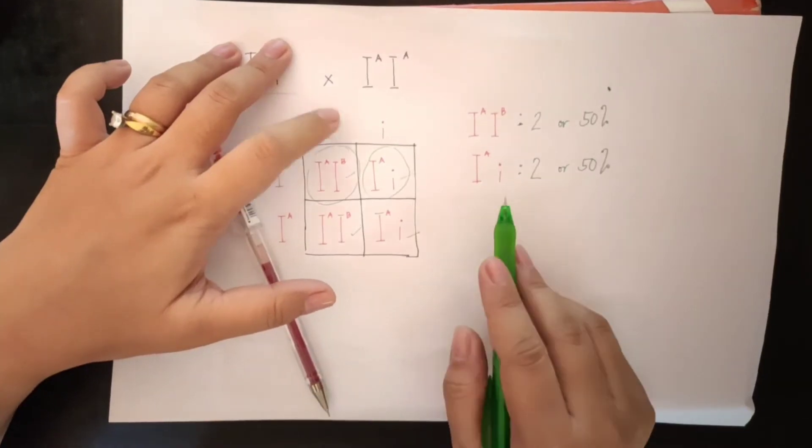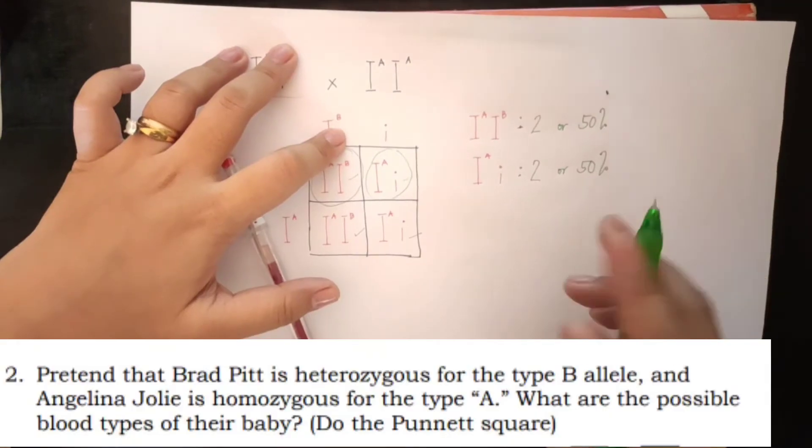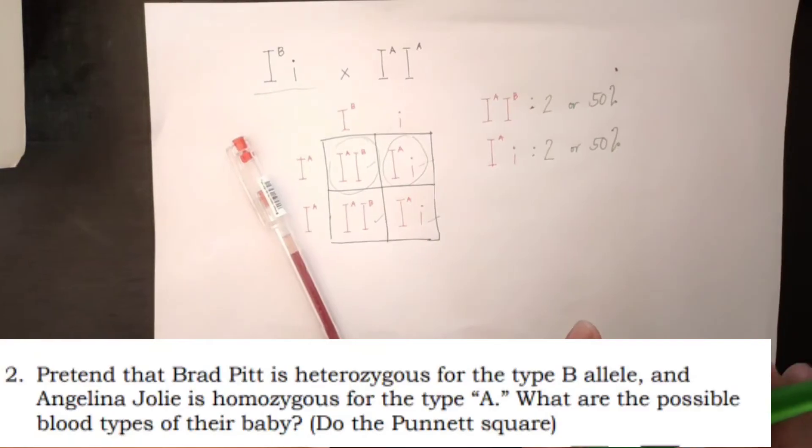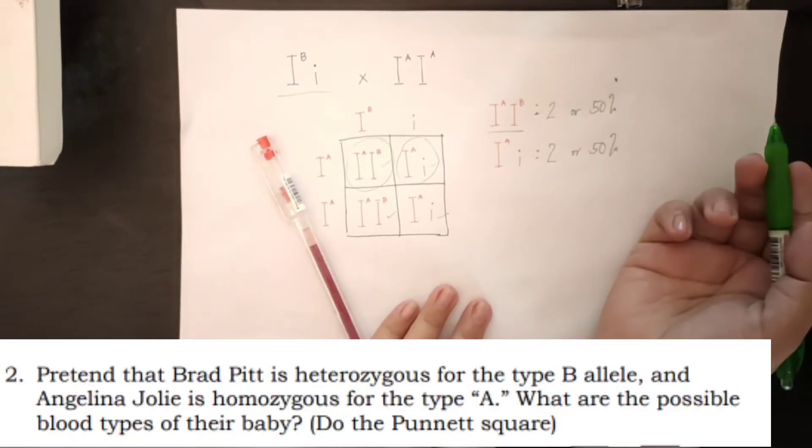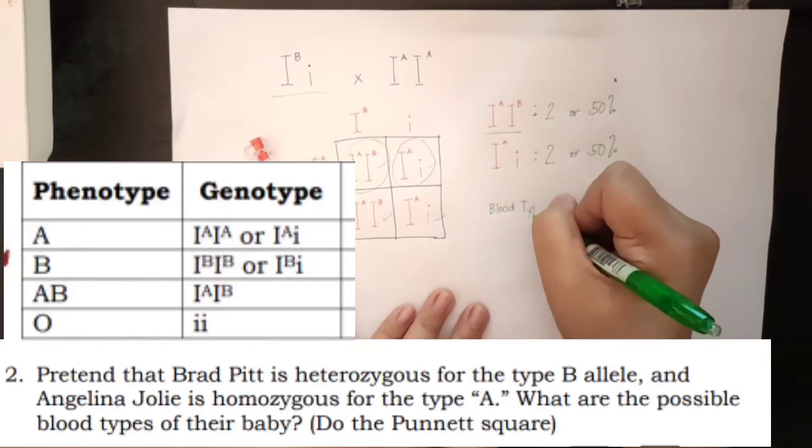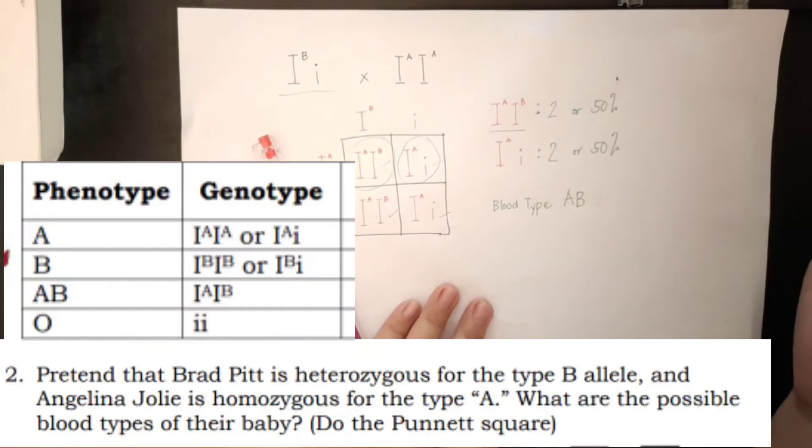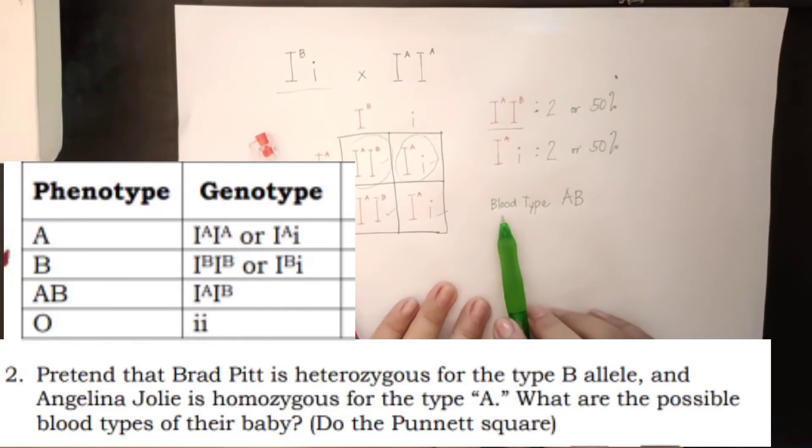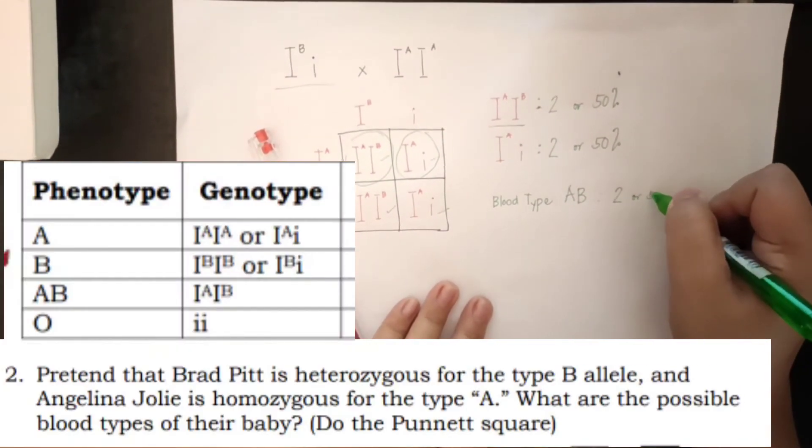Now, since on the screen, you have there the problem, what are the possible blood types? These are the genotype. We are going to get now the phenotype or the exact blood type. This is a genotype of what blood type? Okay, that is blood type AB. So, how many babies or what particular percentage or number of baby that will get a blood type AB? So, 2 or 50%.